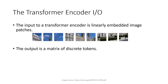To understand BEIT, we need to understand the inputs and outputs of a transformer encoder. The input to a transformer encoder is linearly embedded image patches — patches which are linearly embedded. The output is a matrix of discrete tokens, similar to what we have seen in the tokenizer.